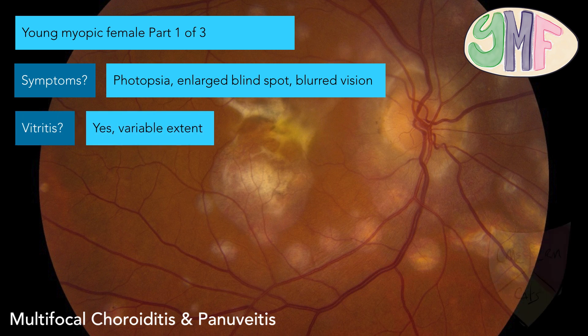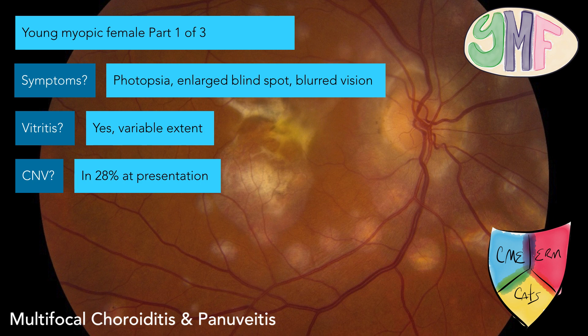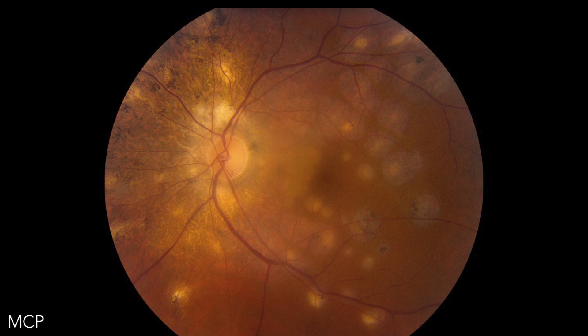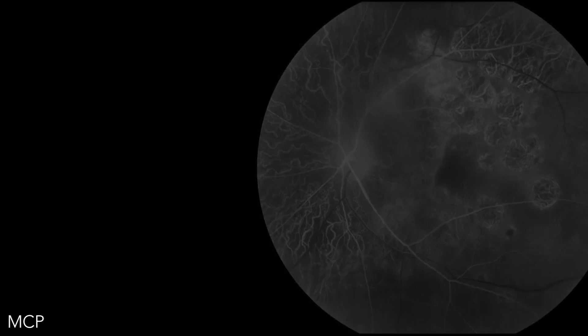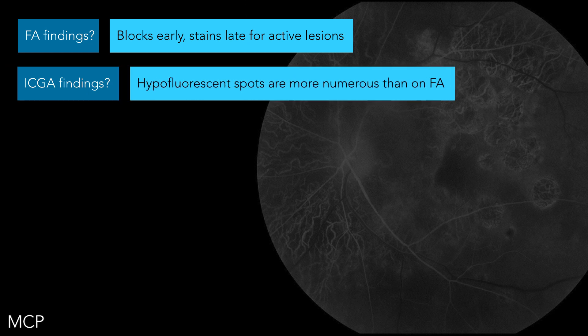Vitritis: yes — but variable. And there's our triad: CME, ERM, and cataracts. CNV, yes or no? Everybody says yes — right, and only in 28% at presentation. So we're going to say more than serpiginous, less than one of the other sisters. Another picture of MCP — patient I managed. FA findings: blocks early, stains late for active lesions. The inactive lesions are a transmission defect — you just get that hyperfluorescence throughout. ICG for MCP has more lesions, and this was helpful in differentiating my AMPPE patient from MCP because the AMPPE patient had different-sized lesions compared with the typical. So the ICG actually helped us say, okay, this is not MCP, this is more like AMPPE.